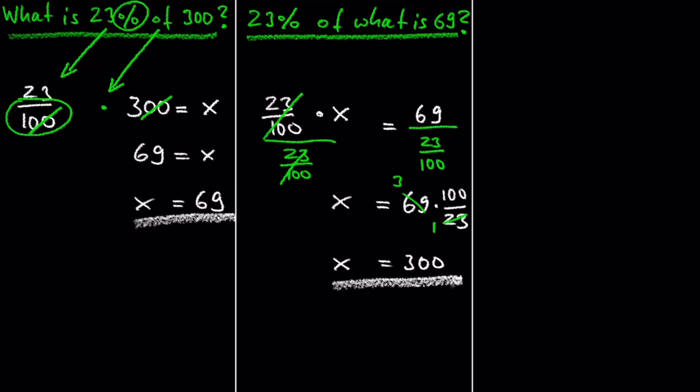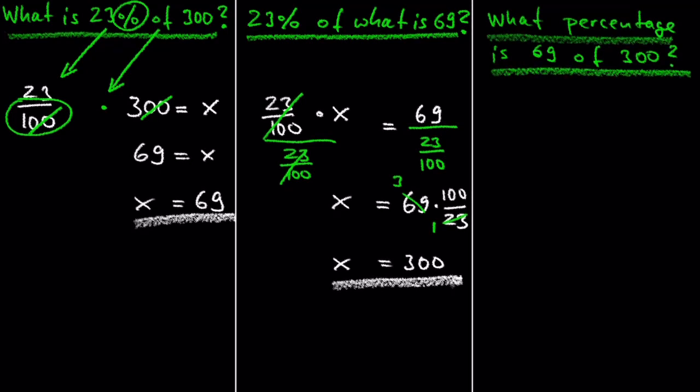And the third case is when we ask what percentage is 69 of 300 equal to? We immediately see that the unknown is the number with the percentage sign because the question is asking for the percent. We also don't see the number with the percentage sign in the question.